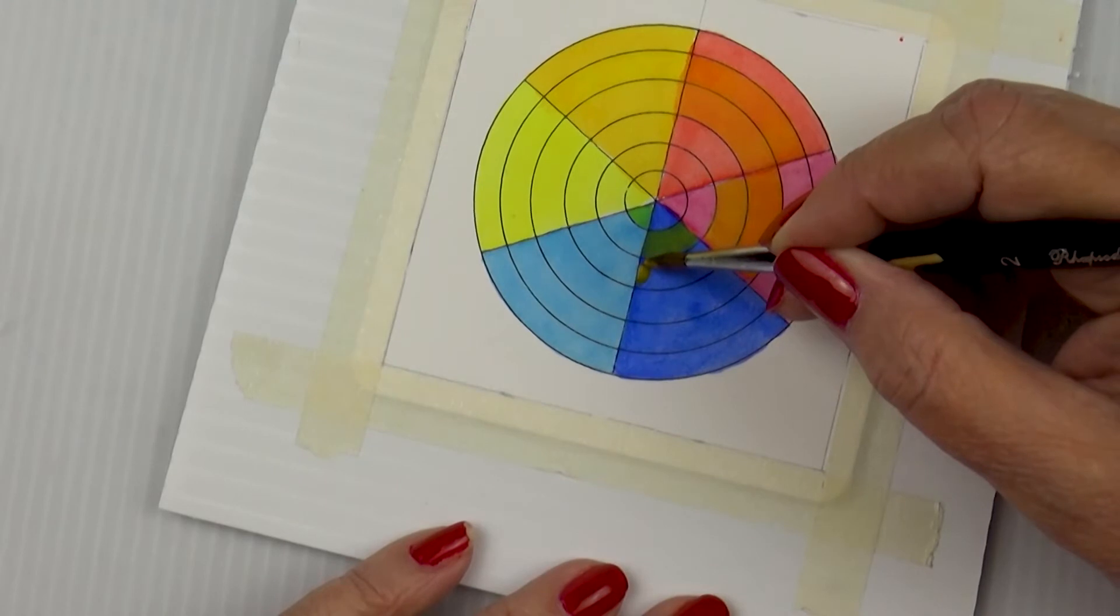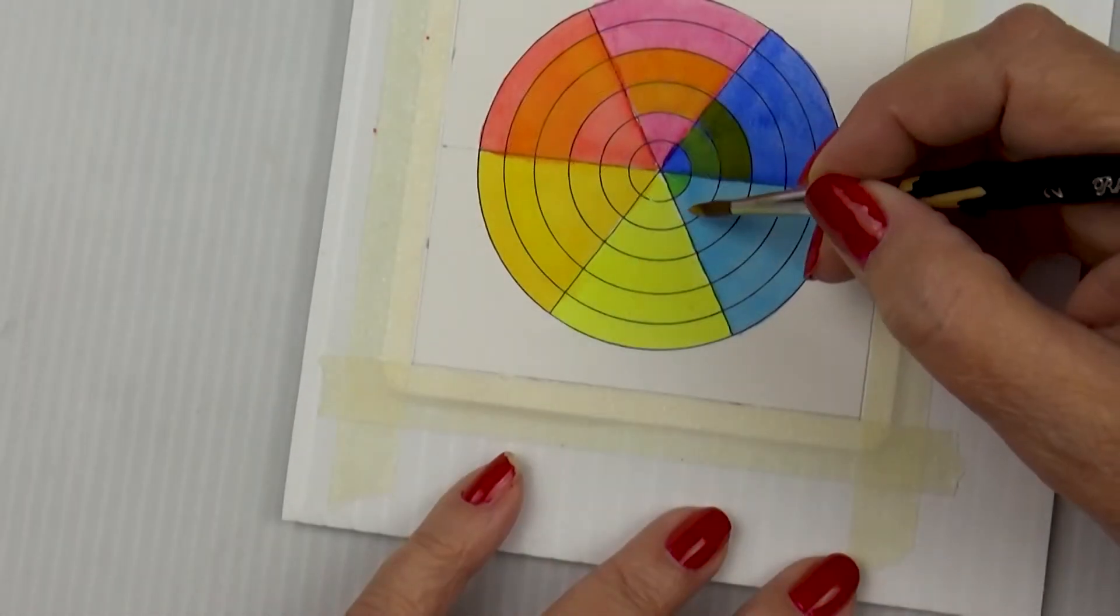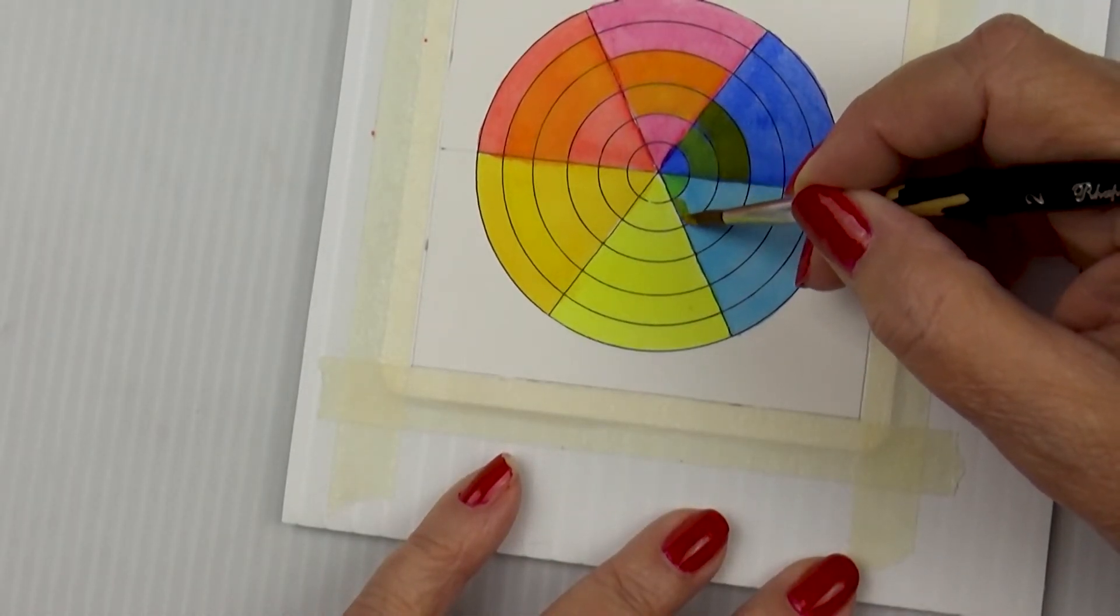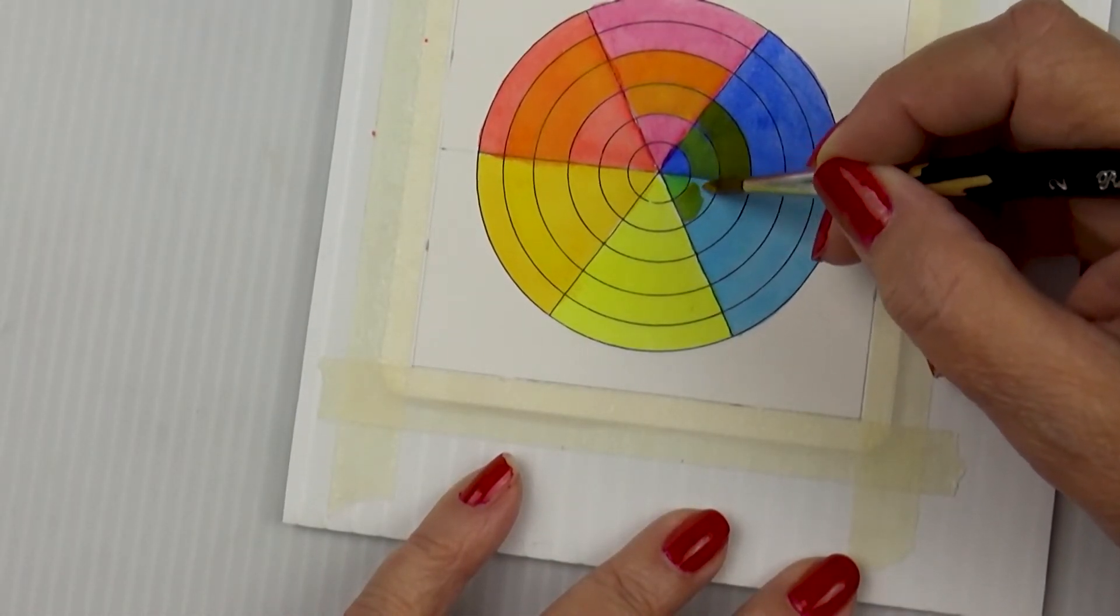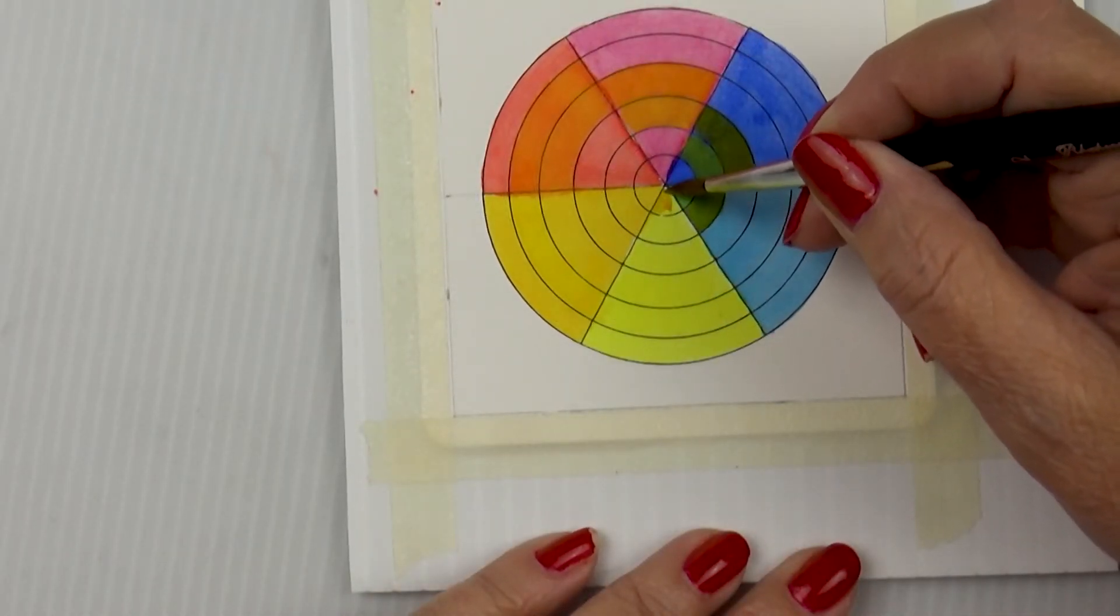Next, I take New Gamboge and I paint it in the fourth concentric circle of French Ultramarine. Then New Gamboge goes into the fifth concentric circle of Phthalo Blue and then the sixth concentric circle of Hansa Yellow Light.